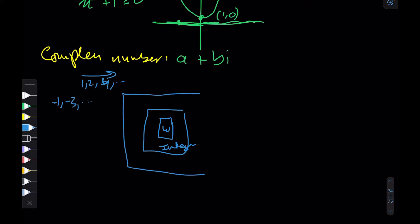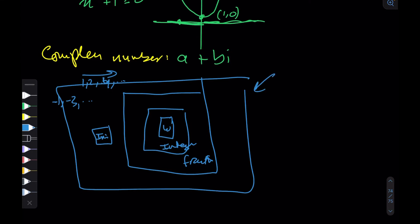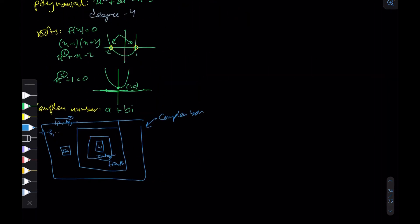You can extend this further into an even bigger box — fractions — and beyond that are irrational numbers. Complex numbers are the biggest box you can get, containing every other number. Any number you can think of — one, two, negative three, negative half, pi, pi plus i, three i — lies within this complex box.